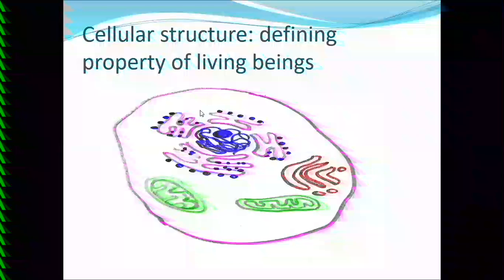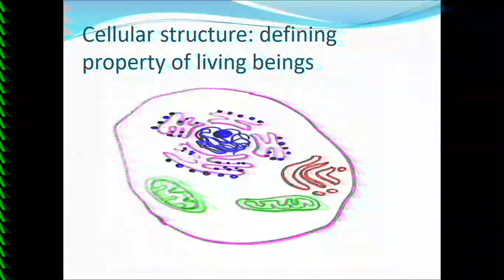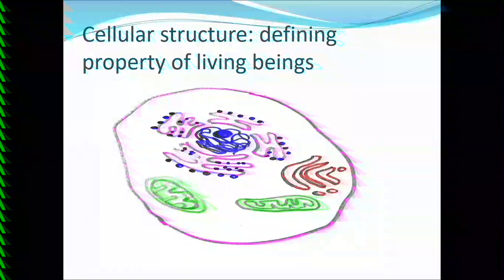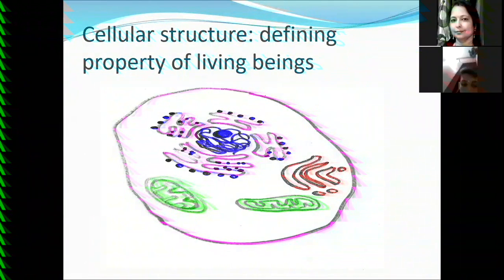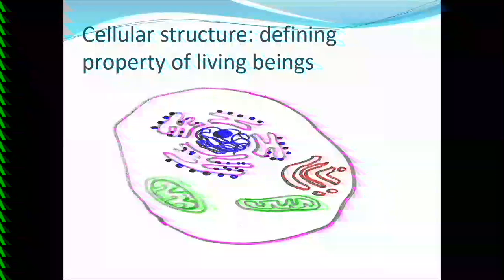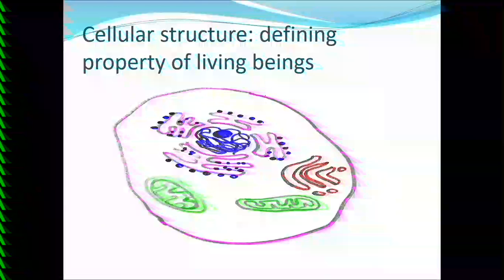The first feature is cellular structure. All organisms are made up of cells. Every living being is a complex unit formed of one or more cells. If an organism is unicellular, it has only one cell, and if there are many cells, the organism is multicellular. So all living organisms have cellular organization.